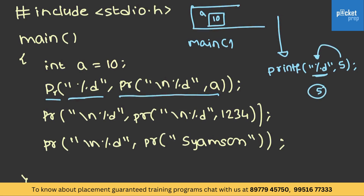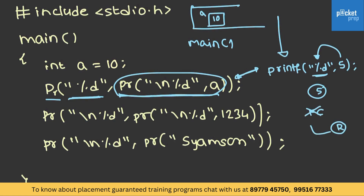Now, this printf is expecting some value to be replaced and the value is present at that location. You can correlate both of these examples. We have seen that printf actually returns something. If you have a function call and it has a return value, whatever is returned will be replaced in the place of the function call. So the value returned by this will be replaced here. It will print a newline and the value of a, which is 10.